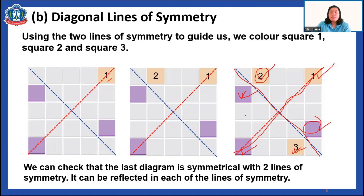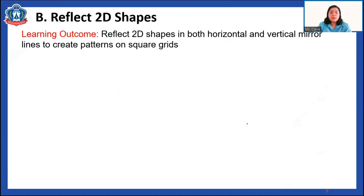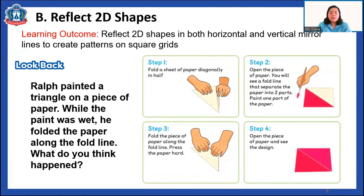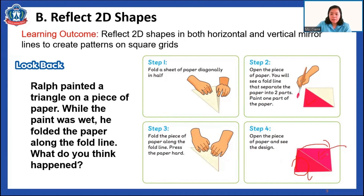Now let's study Lesson B: reflecting shapes. Ralph painted a triangle on a piece of paper. While the paint was wet, he folded the paper along a fold line. Step one: fold the sheet of paper diagonally in half. Step two: open the piece of paper — you will see a fold line separating the paper into two parts. If we fold the paper along that fold line, the paint on one side will be copied onto the other side — this is what we call reflection.